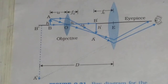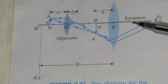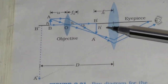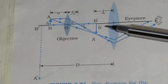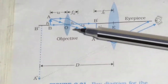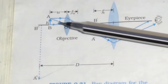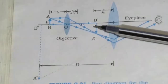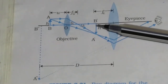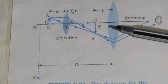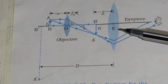What is the basic principle of a compound microscope? The objective forms a real, inverted, and magnified image within the focus of the eyepiece.